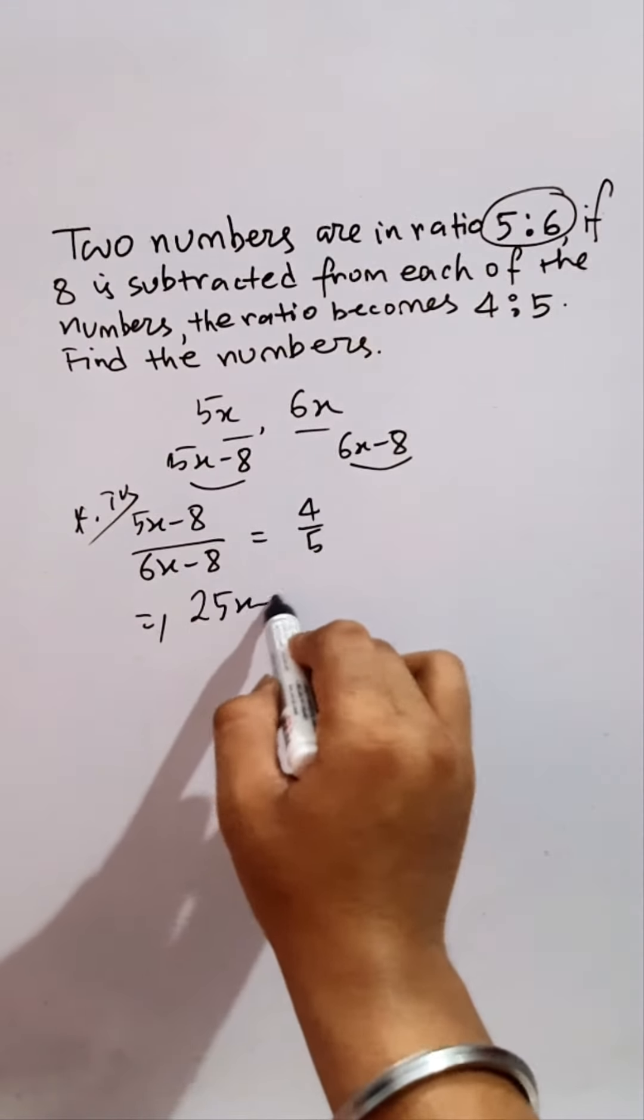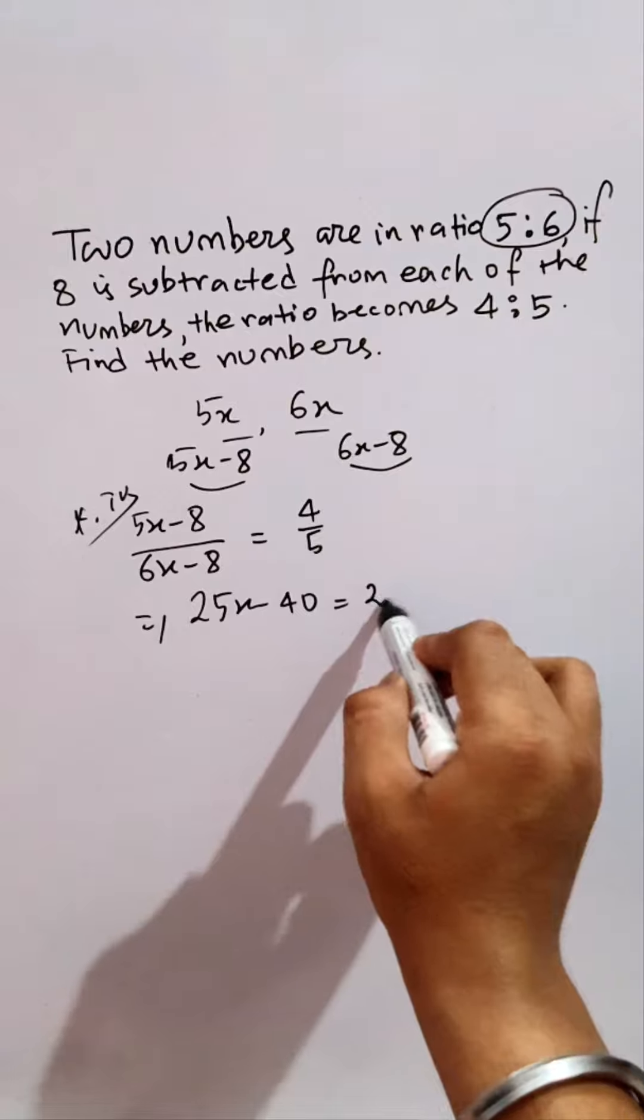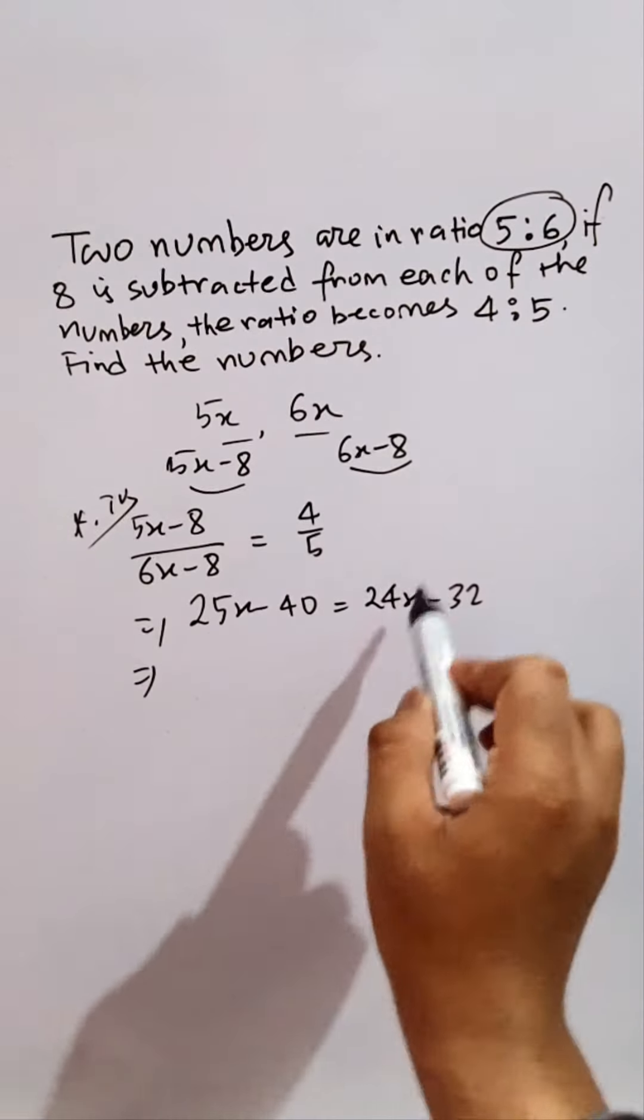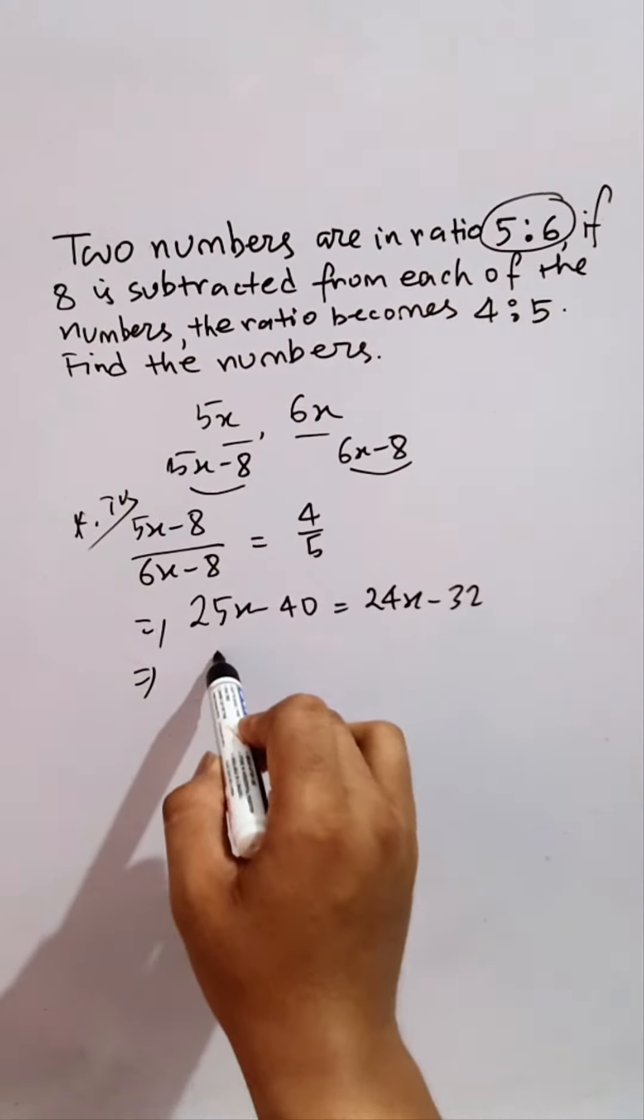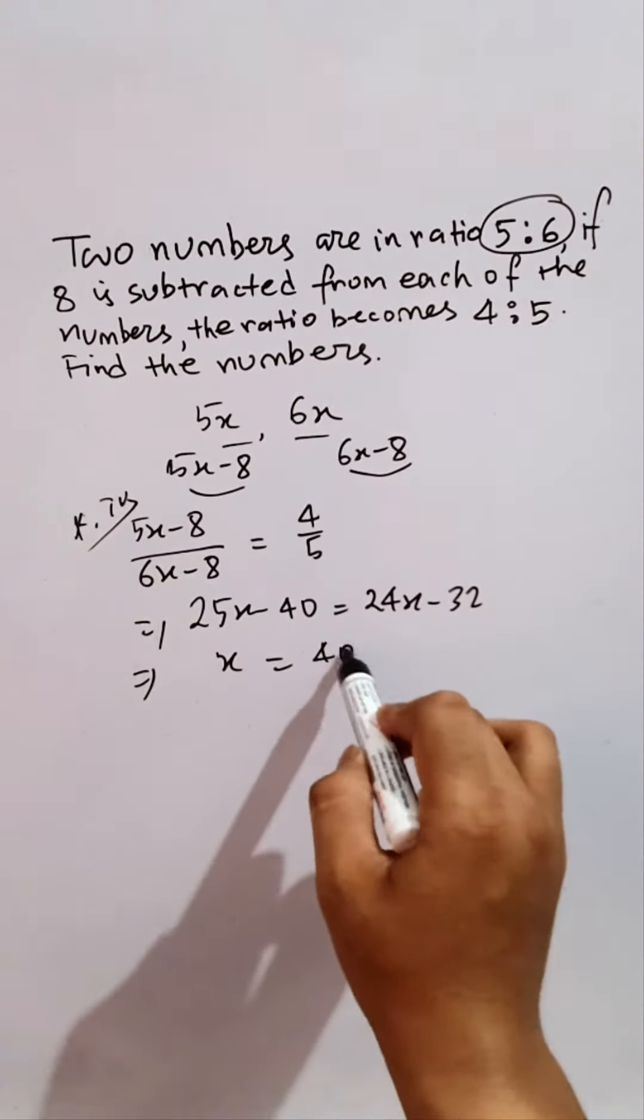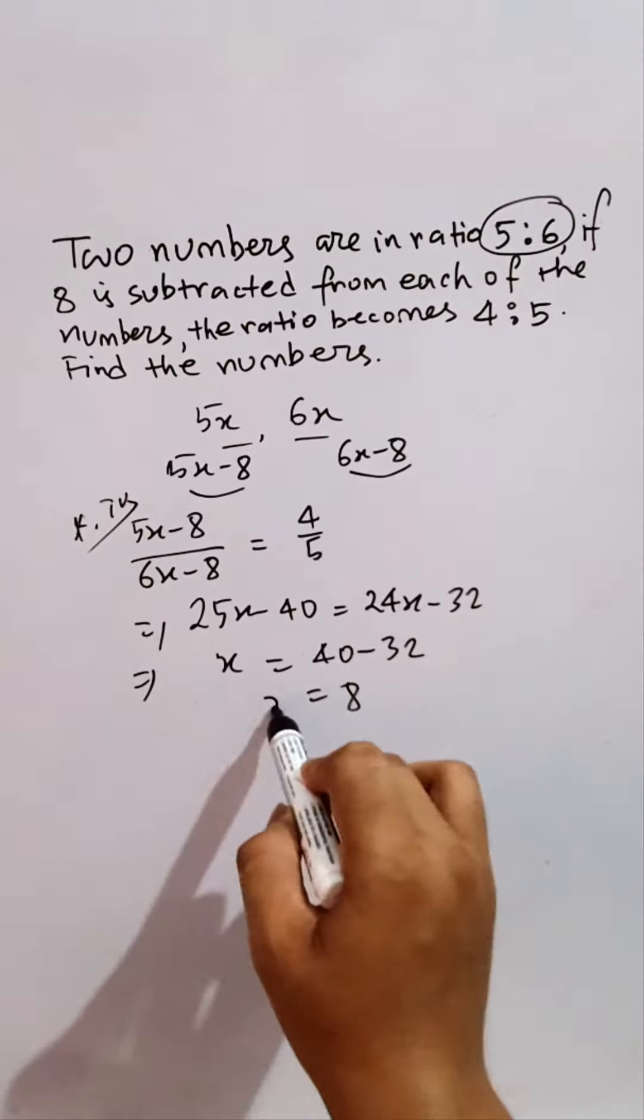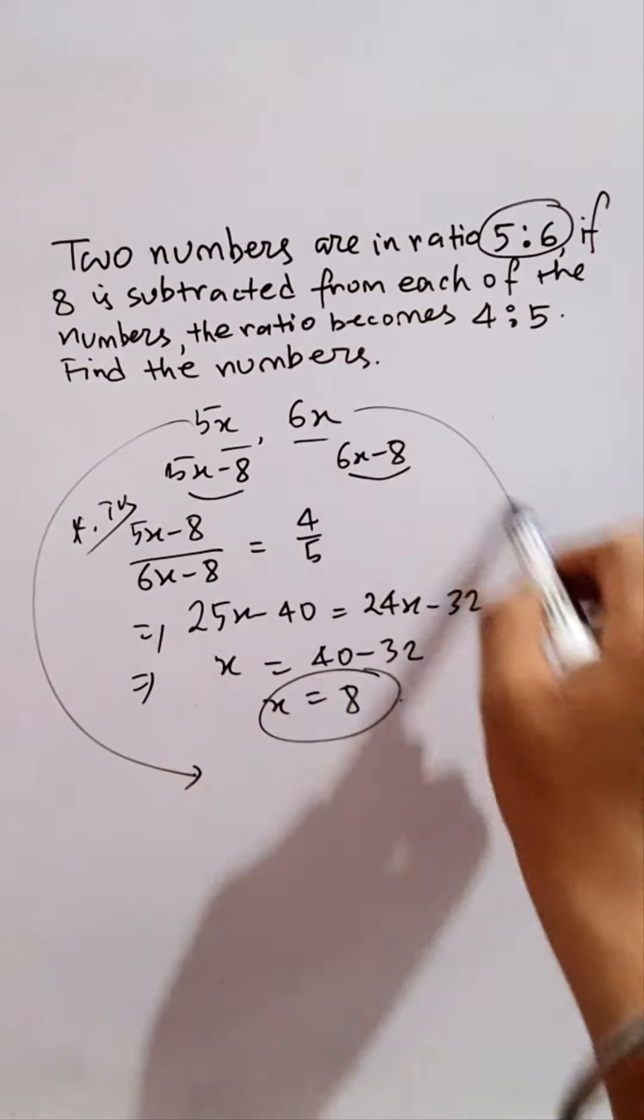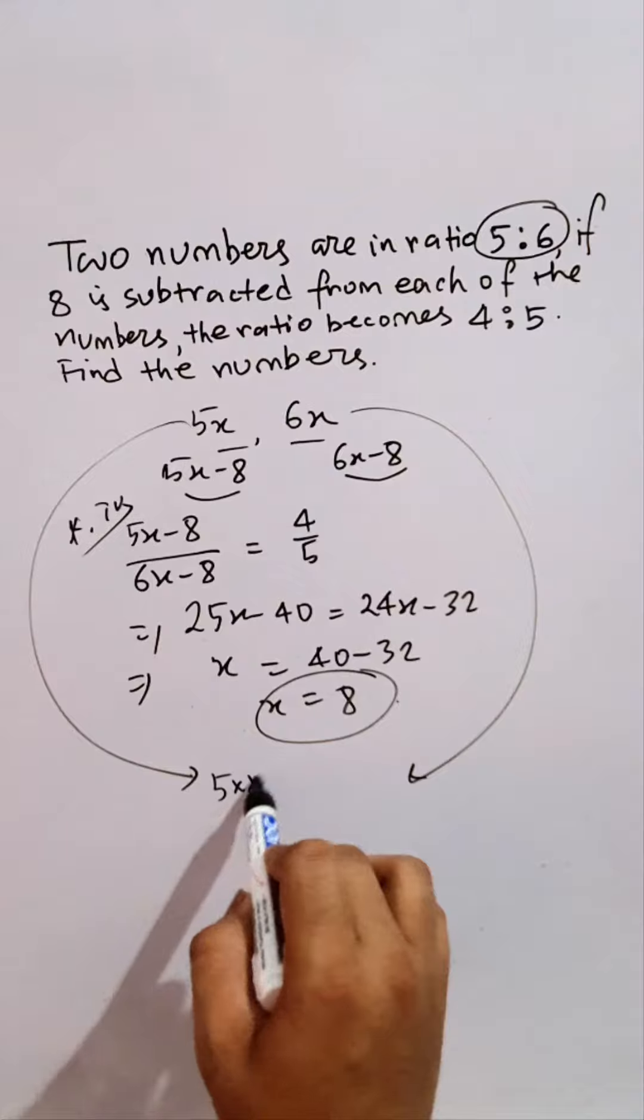Now 24x will be subtracted here. It will be 25 minus 24, that is x equals 40 minus. 40 will be here positive, 40 minus 32 is 8, so x became 8. Now the two numbers, that is 5x and 6x, will be 5 into 8 as 40 and 6 into 8 as 48.